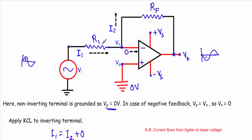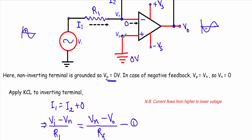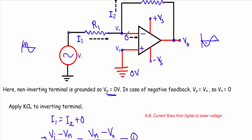Let's say the current flowing through R1 is in this direction and is called i1, and the current flowing through the feedback resistor is i2. Since an operational amplifier has very high input resistance, the current through the inverting terminal itself is zero amperes. So there are three current components: i1 through R1, zero through the inverting terminal, and i2 through the feedback resistor. Applying Kirchhoff's Current Law to the inverting terminal — incoming equals outgoing — gives i1 = i2 + 0.